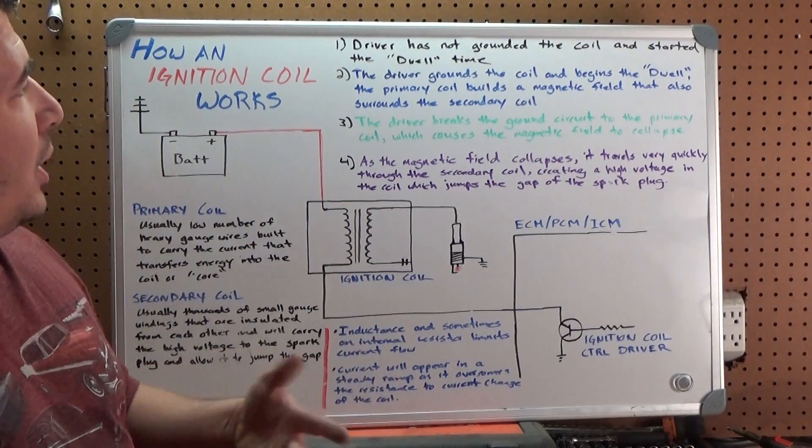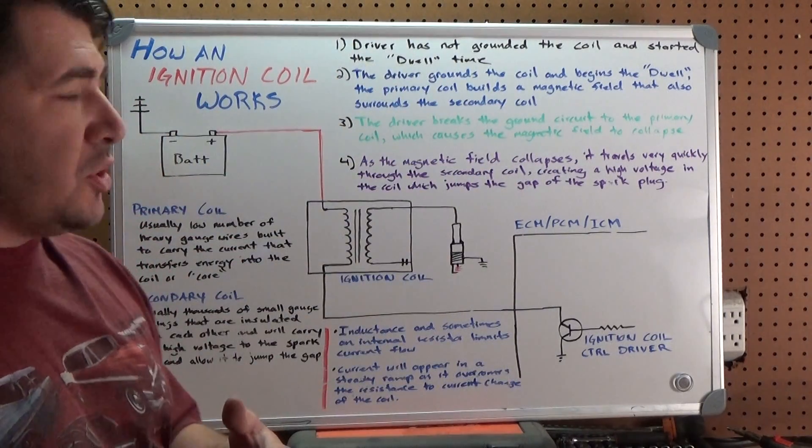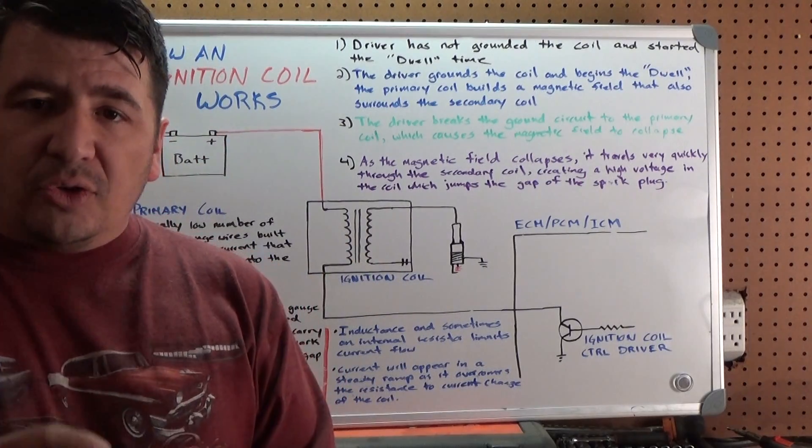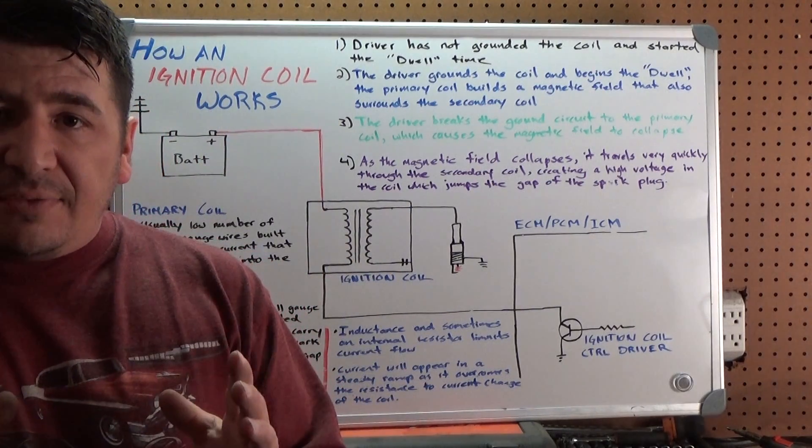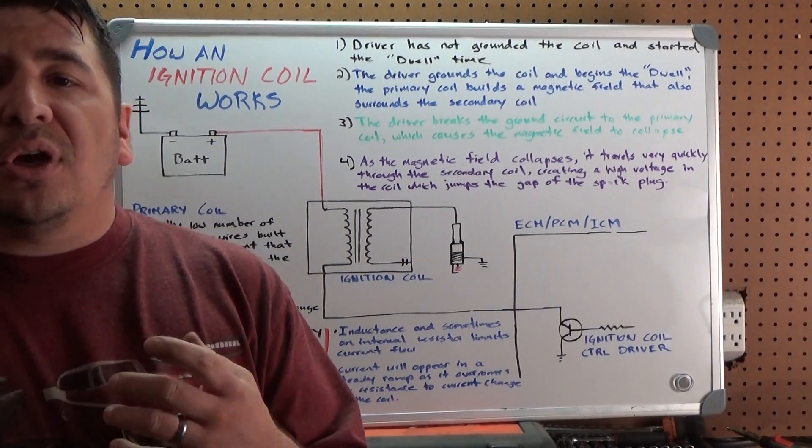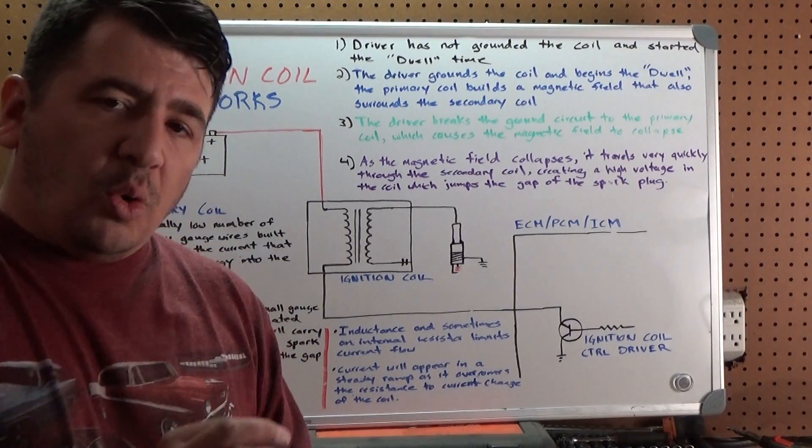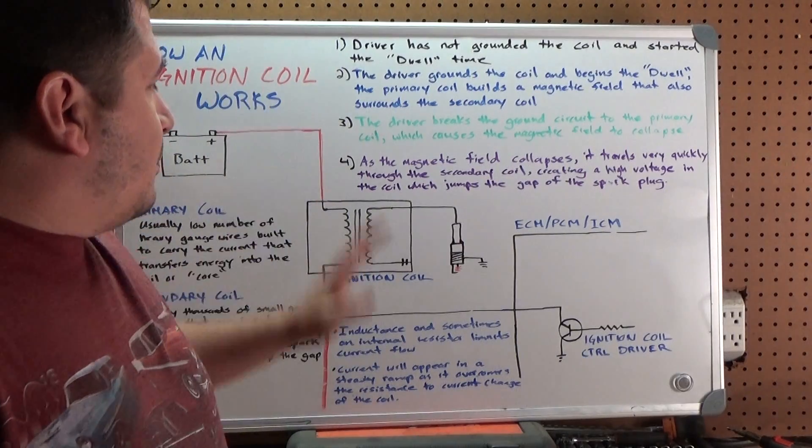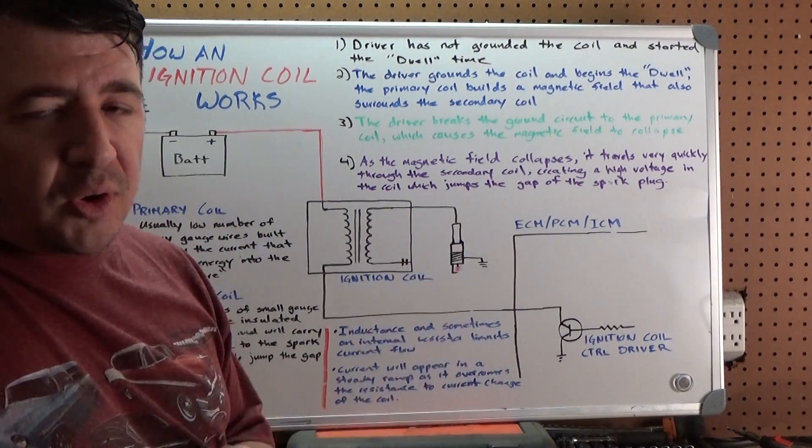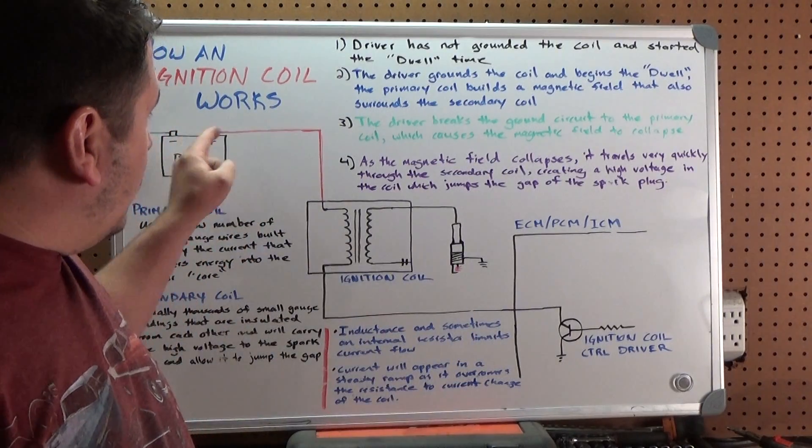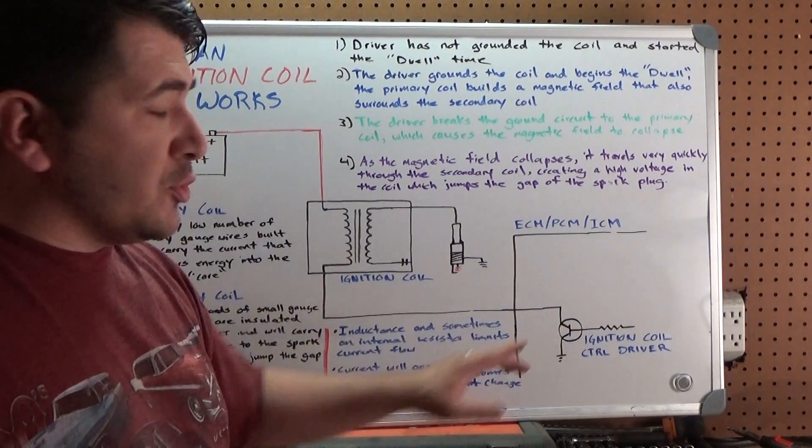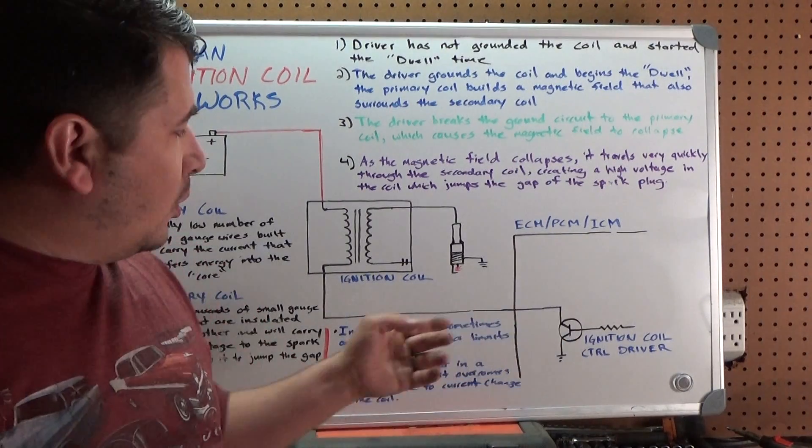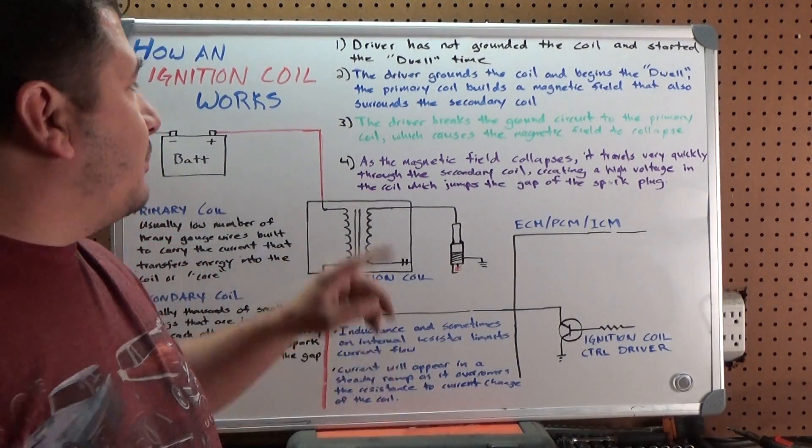Step one: the driver has not grounded the coil and started the dwell time. The dwell time is the amount of time that the primary coil is energized, turned on, allowed to build its magnetic field before it's shut off to generate the high-voltage spark. That's the state it's in, just sitting there in between sparking. It's not grounded, there's voltage present all the way through the coil up to this point in the driver, but it's just like any other switch. It's not turned on, so there's no ground path. The coil's not doing anything.